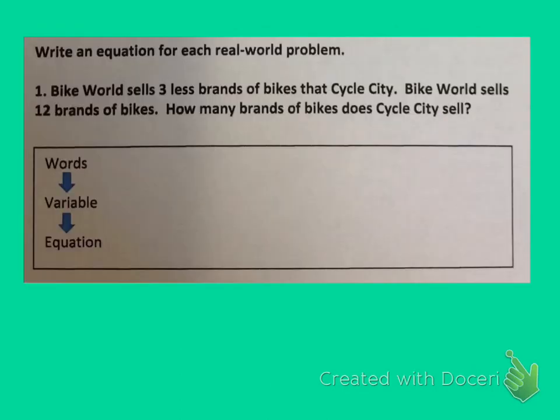Let's try another one. Bike World sells three less brands of bikes than Cycle City. Bike World sells 12 brands of bikes. How many brands of bikes does Cycle City sell? So the first thing I did was highlight the question and then I went back through and I highlighted with different colors the different parts of the problem. And that will personally help me to separate the information so I can write the words, define a variable, and come up with an equation.